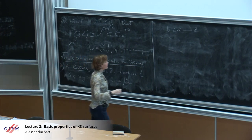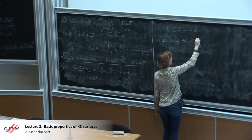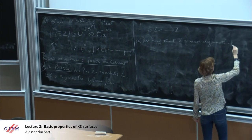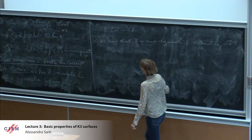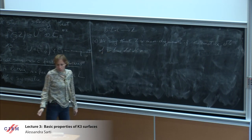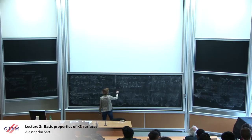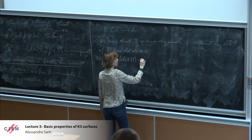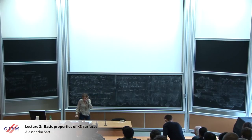Some definitions: we say that L is non-degenerate if the matrix M of B has determinant different from zero. For me, L will always be a non-degenerate lattice. We call the absolute value of det(M) the discriminant of L. One should be careful with the discriminant group, but we'll talk about that later.